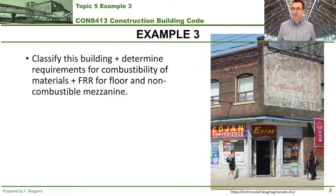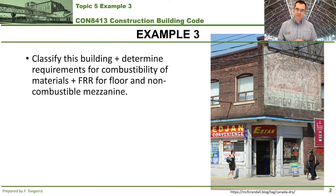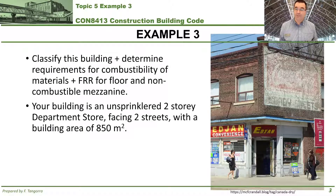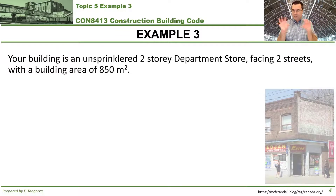Here's Example 3. You're being asked to classify this building — find out what its occupancy is, then determine the requirements for combustibility of the material, whether it's combustible or non-combustible. Finally, find out the fire resistance rating for the floor and the non-combustible mezzanine. The building shown is unsprinklered, two stories, a department store. It faces two streets and has a building area of 850 square meters.